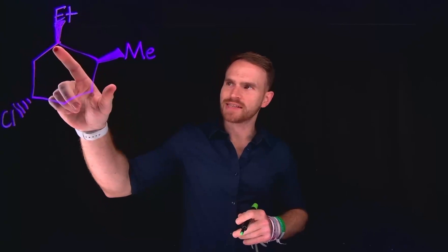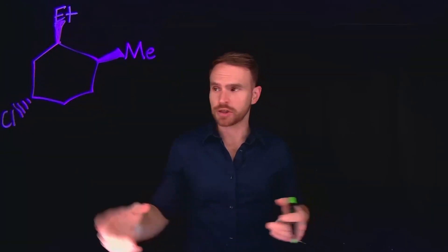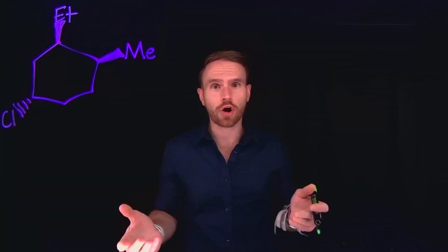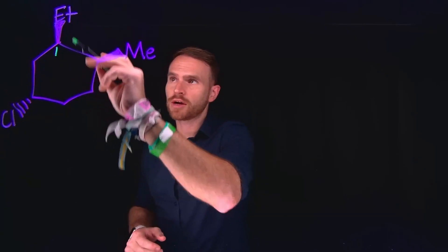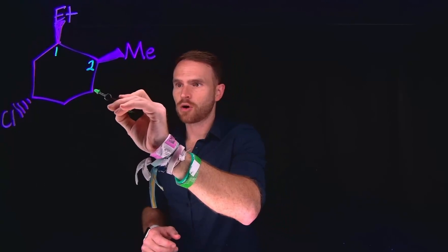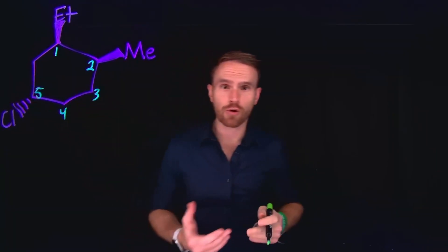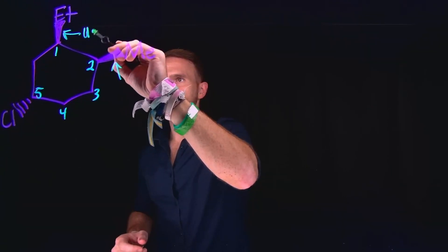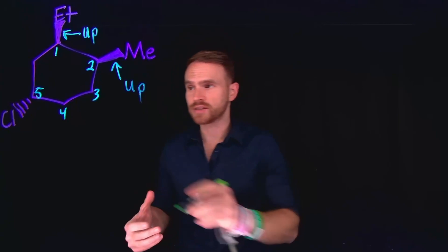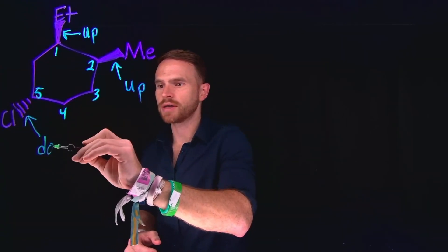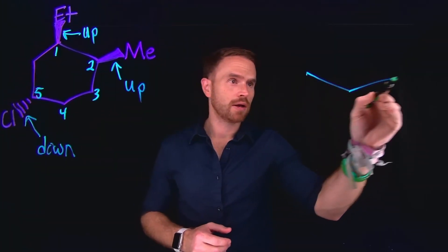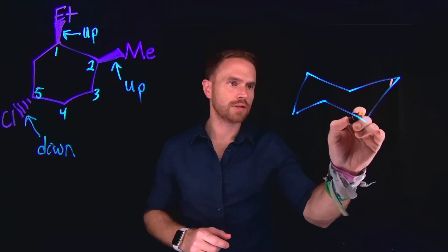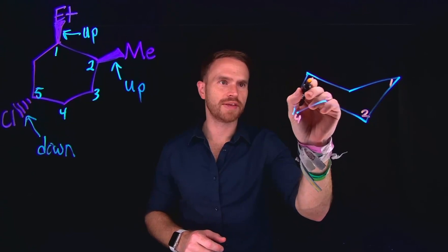Considering this cyclohexane ring, which has an ethyl group and a methyl group with wedges — meaning they're going in the same direction — and a chloro group at this position going in the opposite direction, we should start by identifying which direction they're going, up or down, and which carbon atoms they are located on. We can start by counting the carbons: at carbon 1 is the ethyl group, carbon 2 is the methyl group, carbon 3 is here, 4 is here, and 5 is the location of the chloro group. Importantly, the ethyl and methyl groups are both going up because they contain wedges, whereas the chloro group has dashed lines indicating it should be going in the opposite direction, or down.